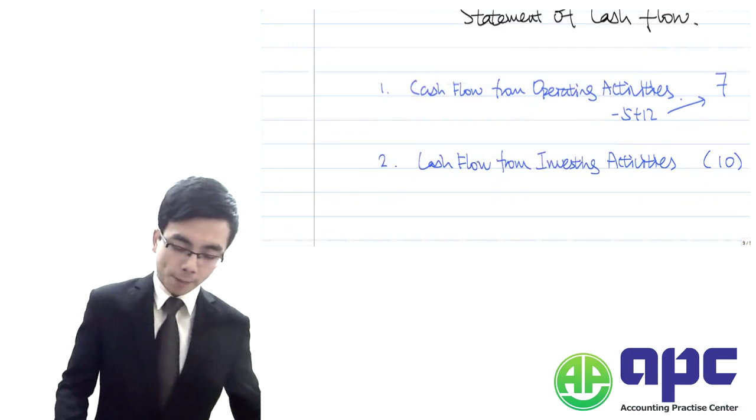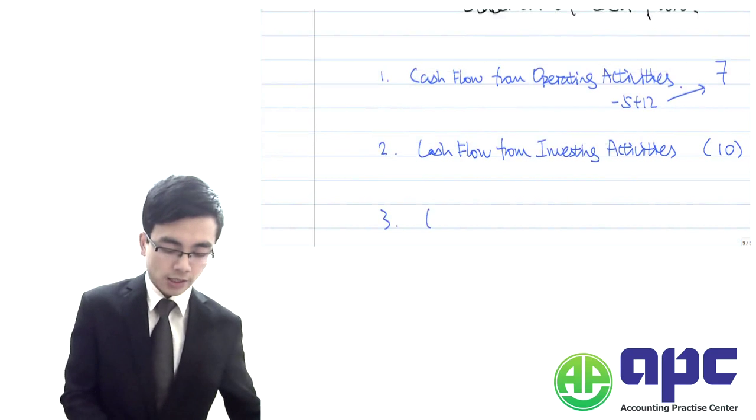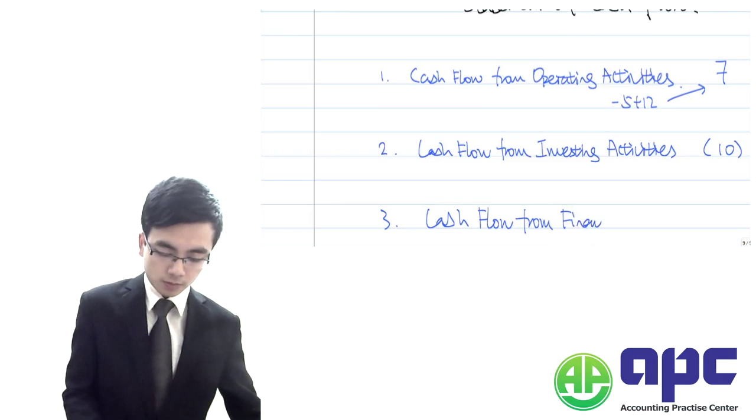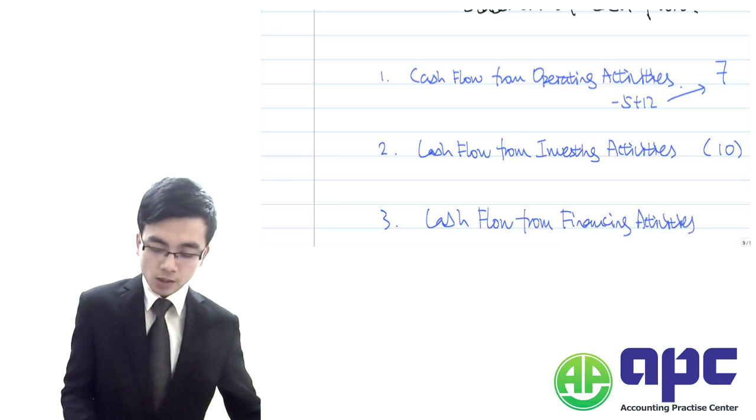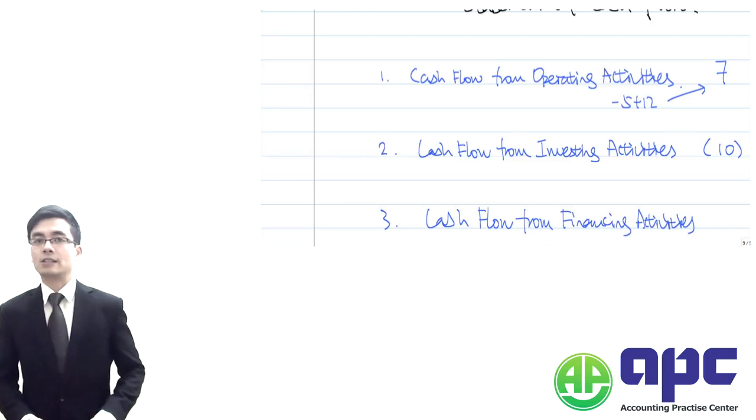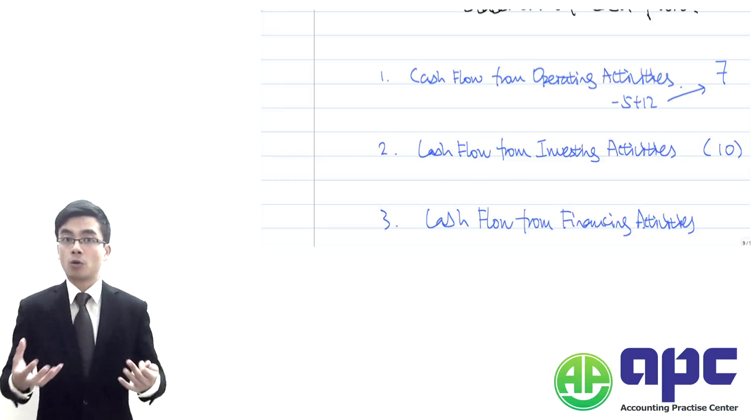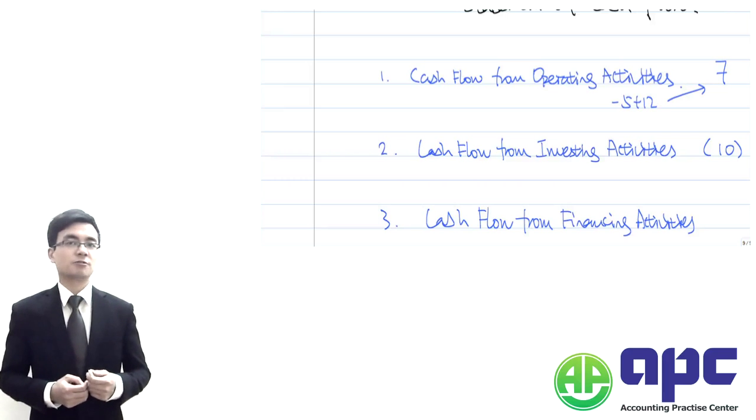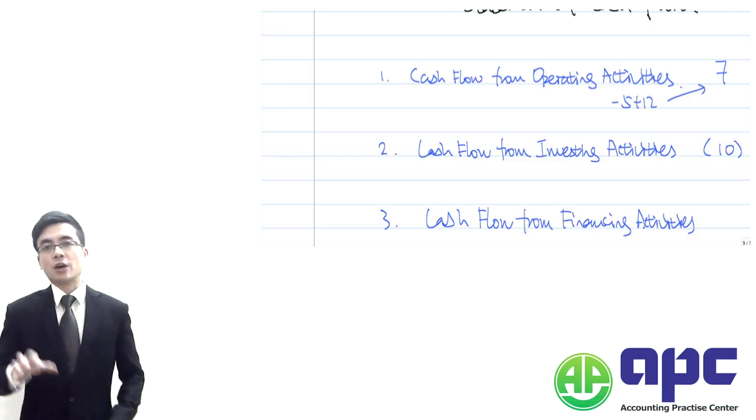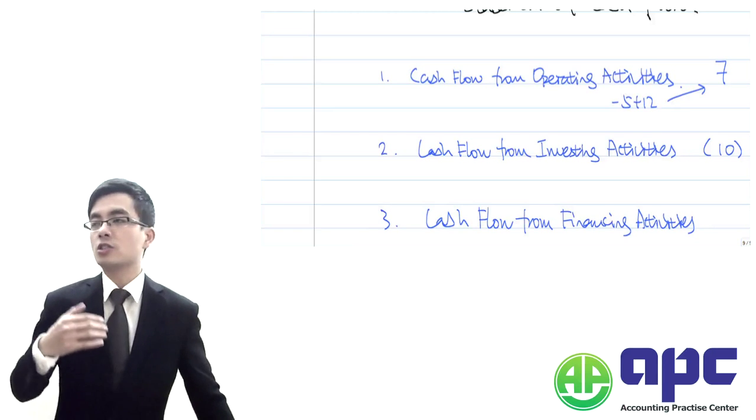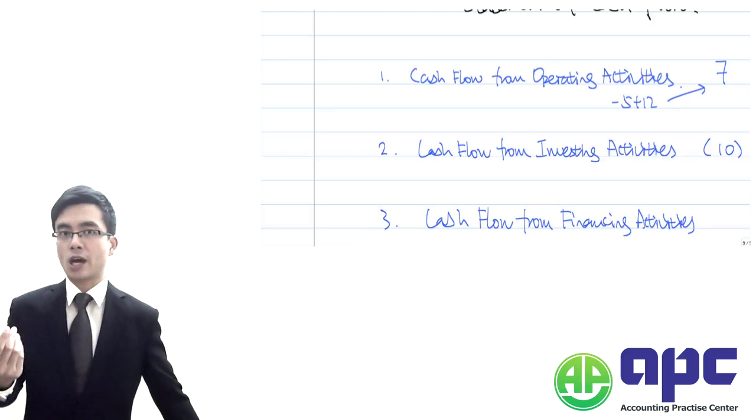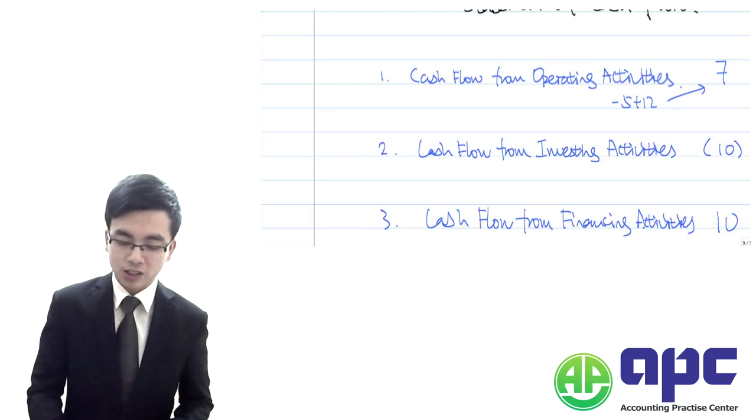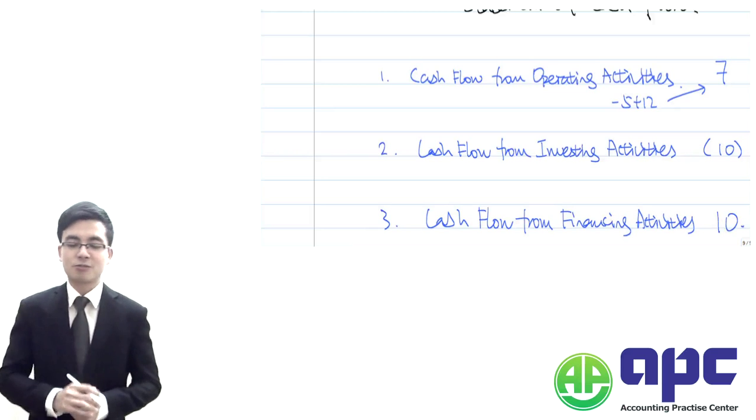The third component within this statement of cash flow: you include the cash flow from the financing activities. This is when you're going to issue some shares or borrow long-term debt from the bank. For example, if you're going to issue some shares and you got $10 from the shareholder, that $10 plus 10 will be included into the financing activity.